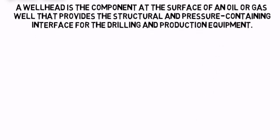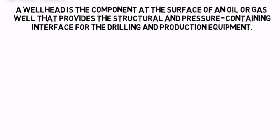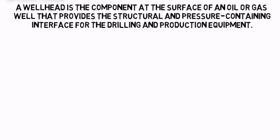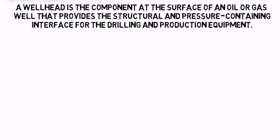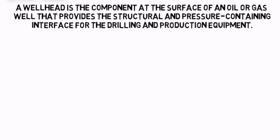The primary purpose of a wellhead is to provide the suspension point and pressure seals for the casing strings that run from the bottom of the hole sections to the surface pressure control equipment.